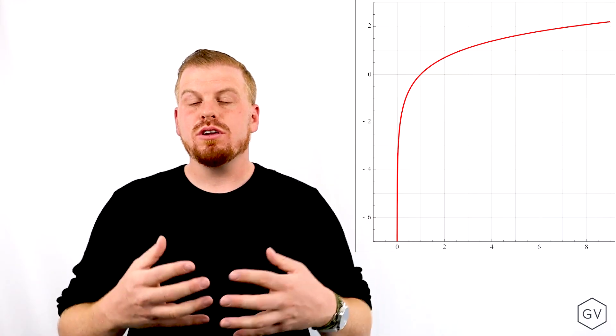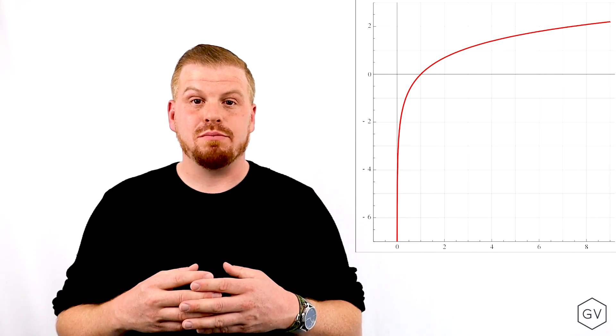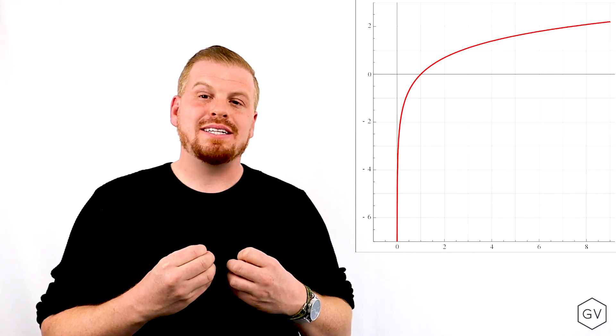And if we therefore use continuously compounded returns, and we measure implied volatility using continuously compounded returns, that incorporates the asymmetry of infinite upside to asset prices, but finite bounded by zero downside to asset prices.